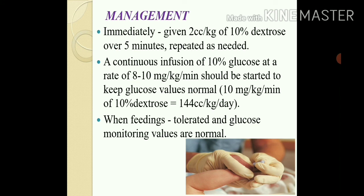For management, immediately give 2 cc per kg of 10% dextrose over 5 minutes, repeated as needed according to the neonate's condition. Then start a continuous infusion of 10% glucose at a rate of 8 to 10 mg per kg per minute to keep glucose values normal. When feedings are accepted, monitor glucose values normally at regular intervals.